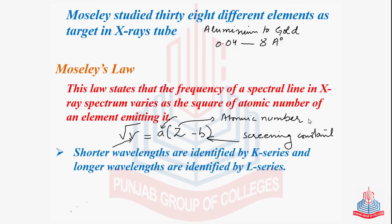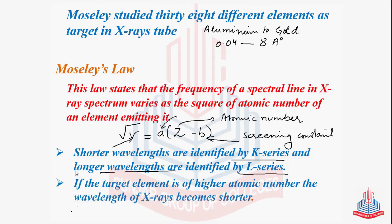The shorter wavelengths are identified by the K-series, whereas the longer wavelength X-rays are identified by the L-series. We can also relate it with Planck's quantum theory in that if the target element is of higher atomic number, then the wavelength of the X-rays produced becomes shorter.